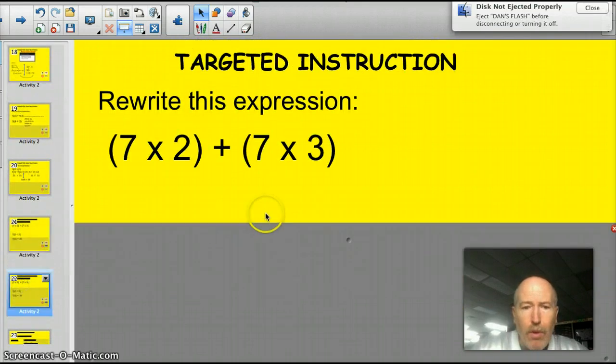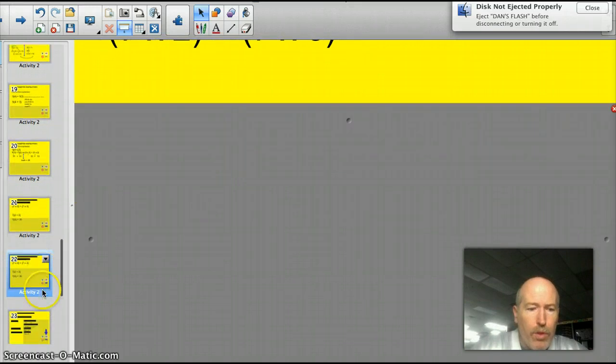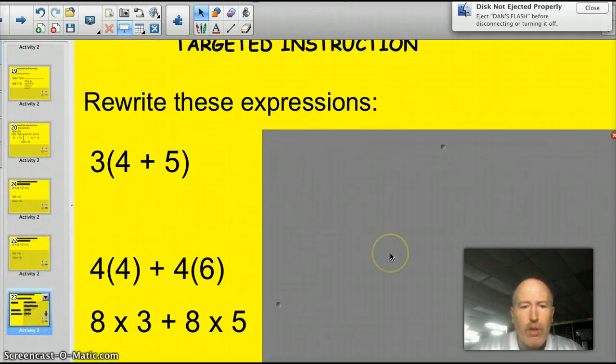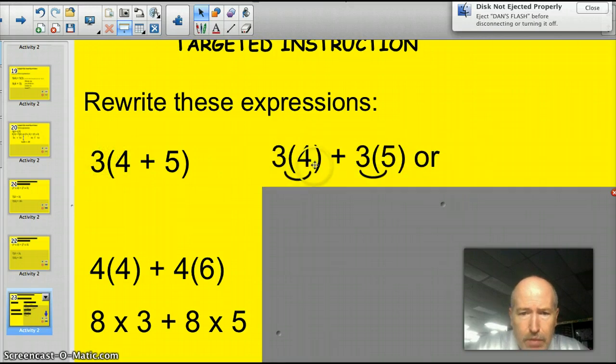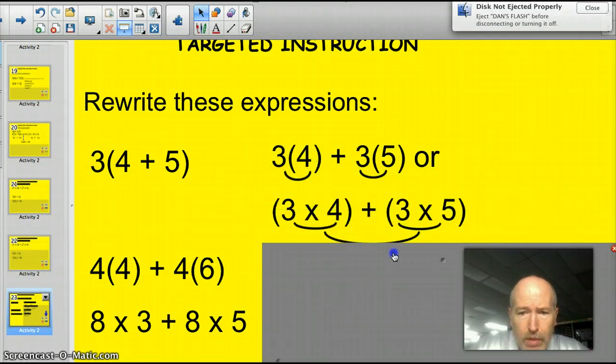Alright. Time for three quickies we're going to do. Alright. Go ahead and pause the video and try rewriting these three expressions. Go. I'm back. Let's see how you did. Well, this one here, we can distribute the 3 out to give me 3 times 4 plus 3 times 5. Or if you want to write it this way, 3 times 4 with a times symbol. Okay?